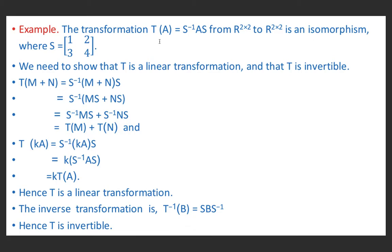Suppose a transformation T(A) = S⁻¹AS is defined like this. We will show that it is an isomorphism, where S is the matrix [[1,2],[3,4]], a 2×2 matrix whose determinant is not equal to zero — because if the determinant is zero, the inverse cannot exist. We will show that T is linear and T is one-one and onto, meaning it is invertible.